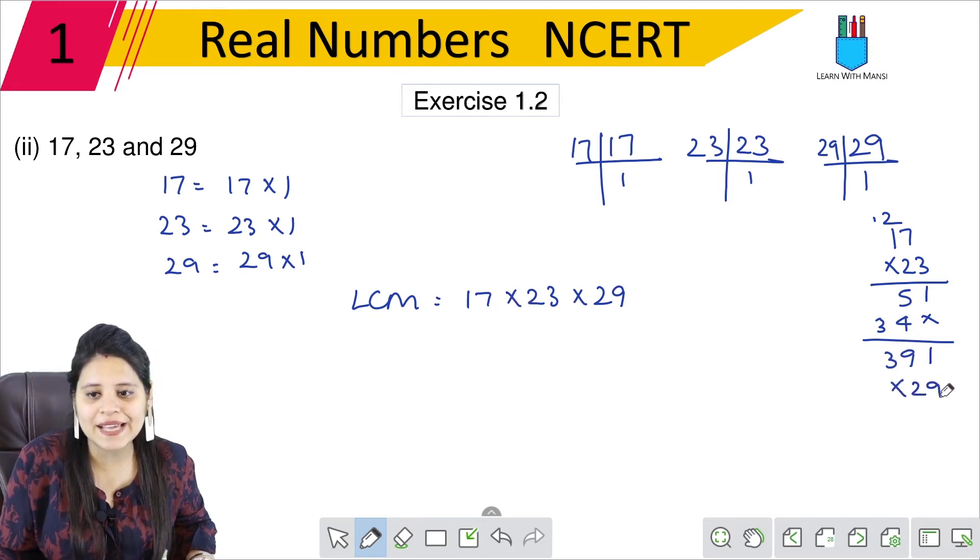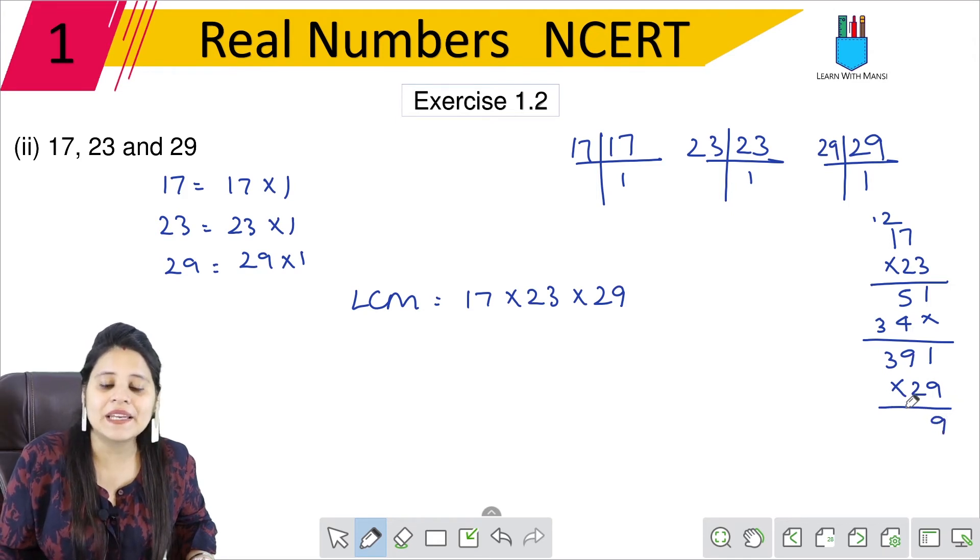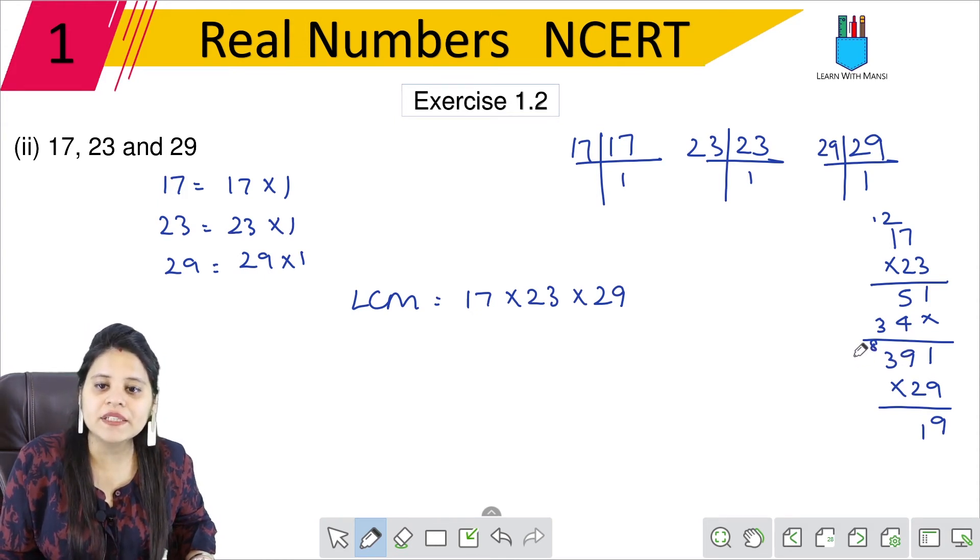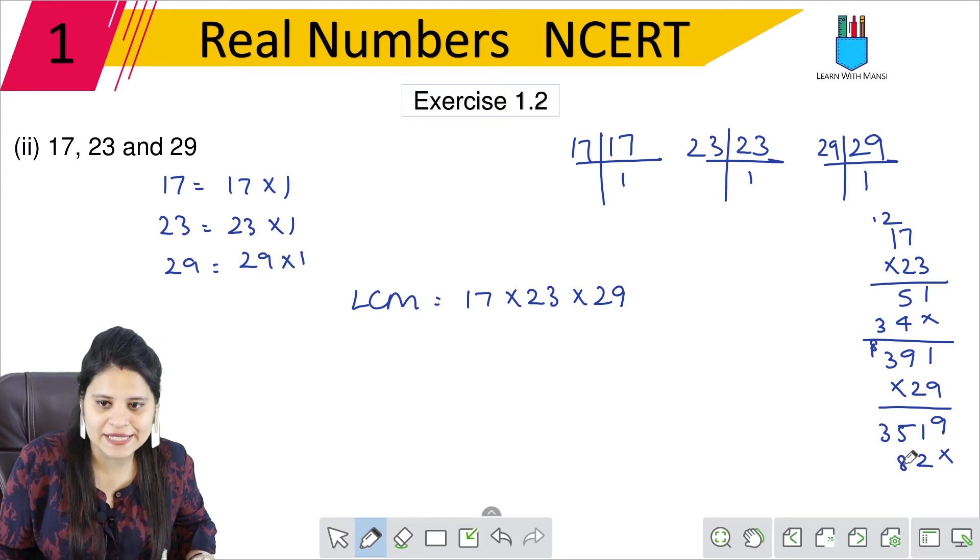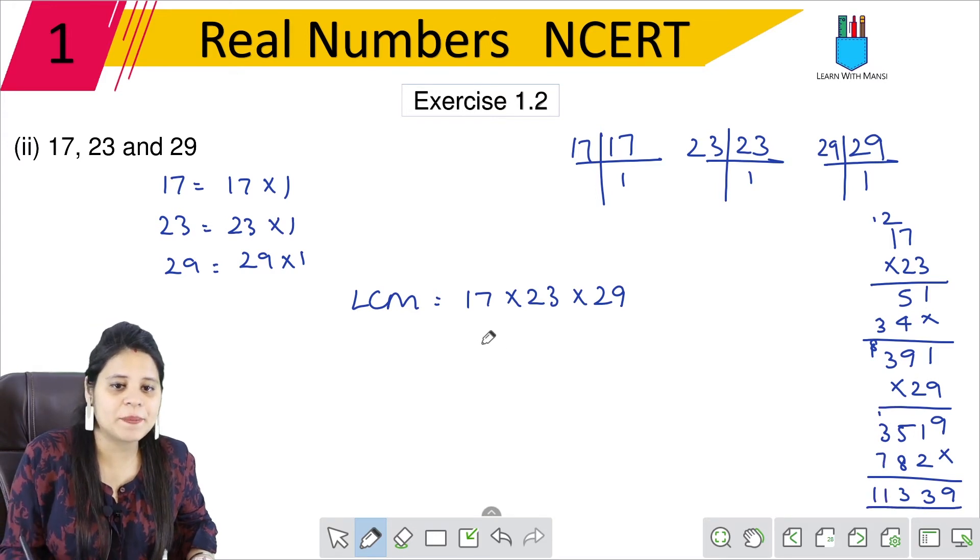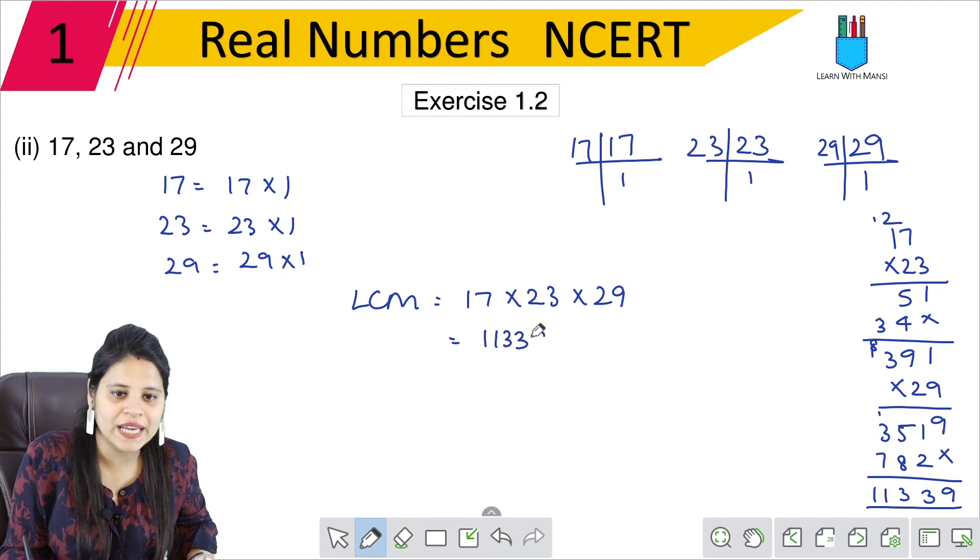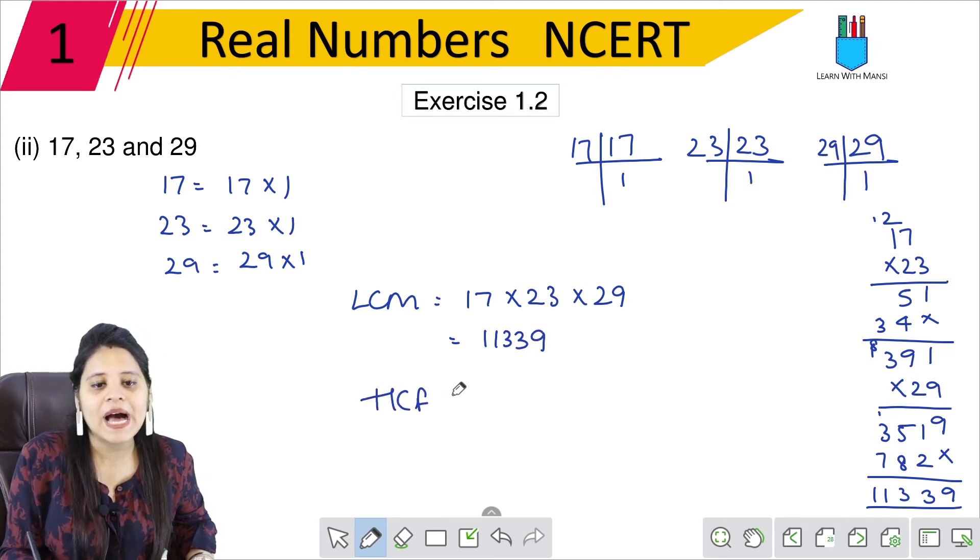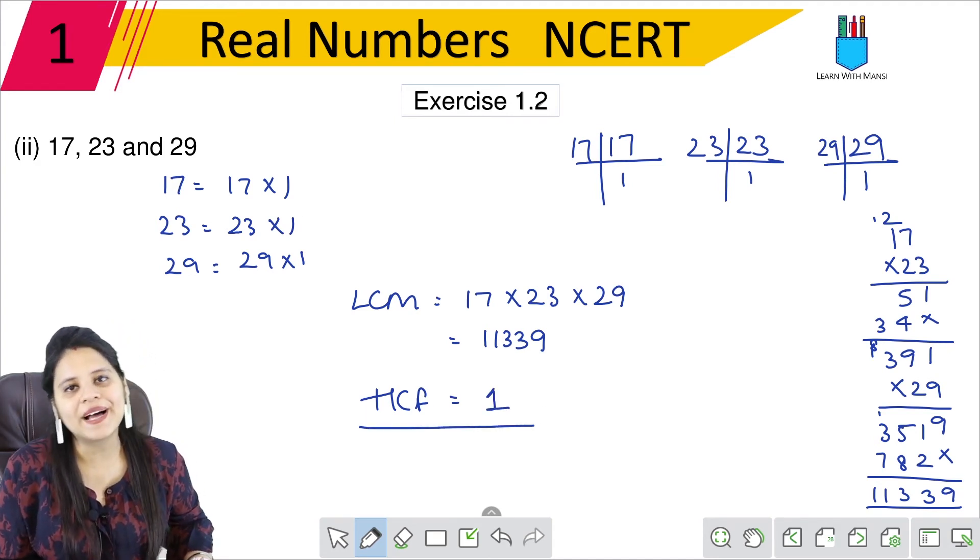So 9 × 1 is 9, 9 × 9 is 81. Then 9 × 3 is 27, so 35. Then 2 × 1 is 2, 2 × 9 is 18, 2 × 3 is 6 plus 1, 7. So this is 11339. So this is LCM. Now HCF. HCF is 1 since nothing is common. So 1 will be HCF.